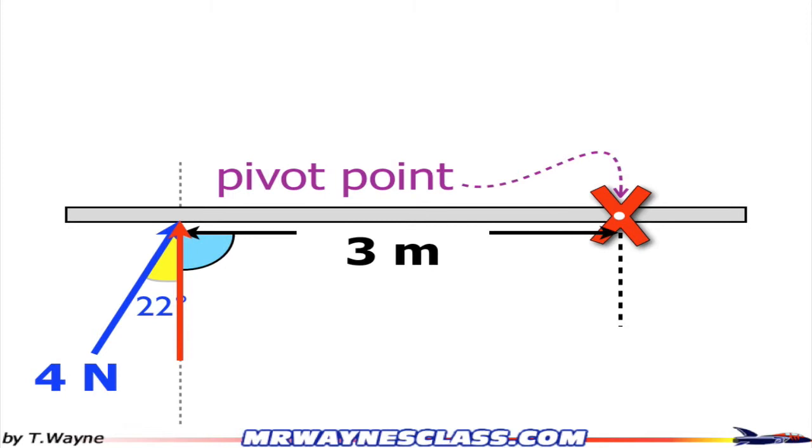So that's going to be the hypotenuse times cosine 22 degrees, which in this case is 4 newtons cosine 22.